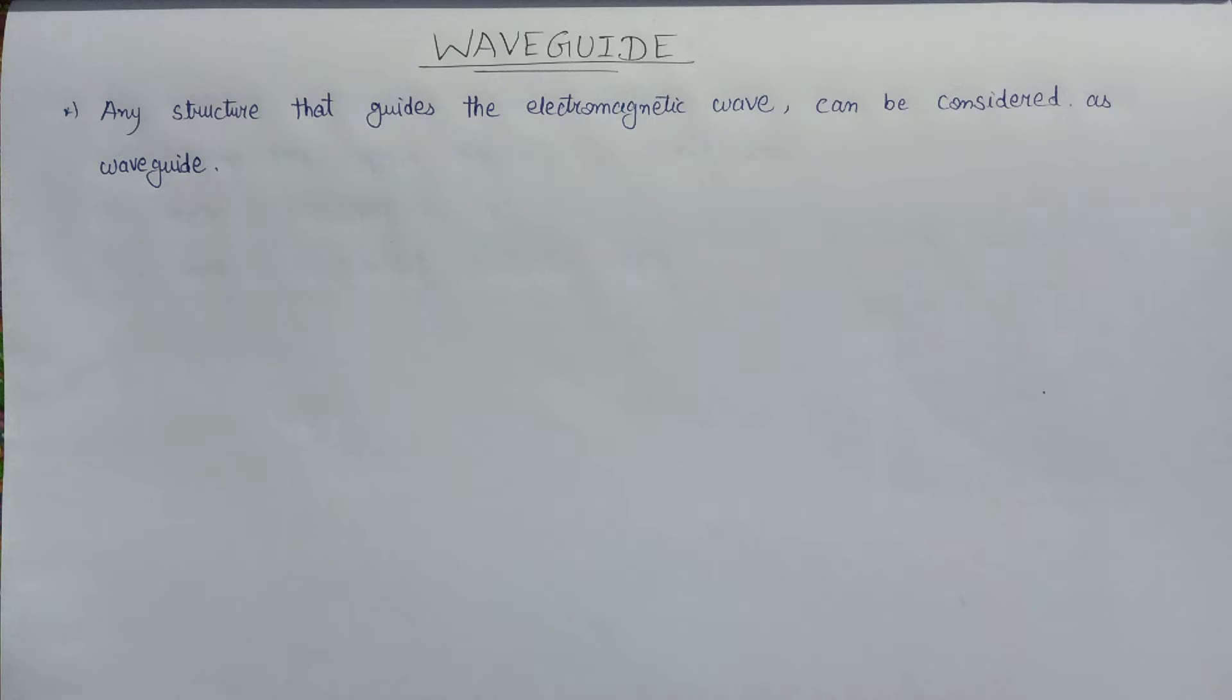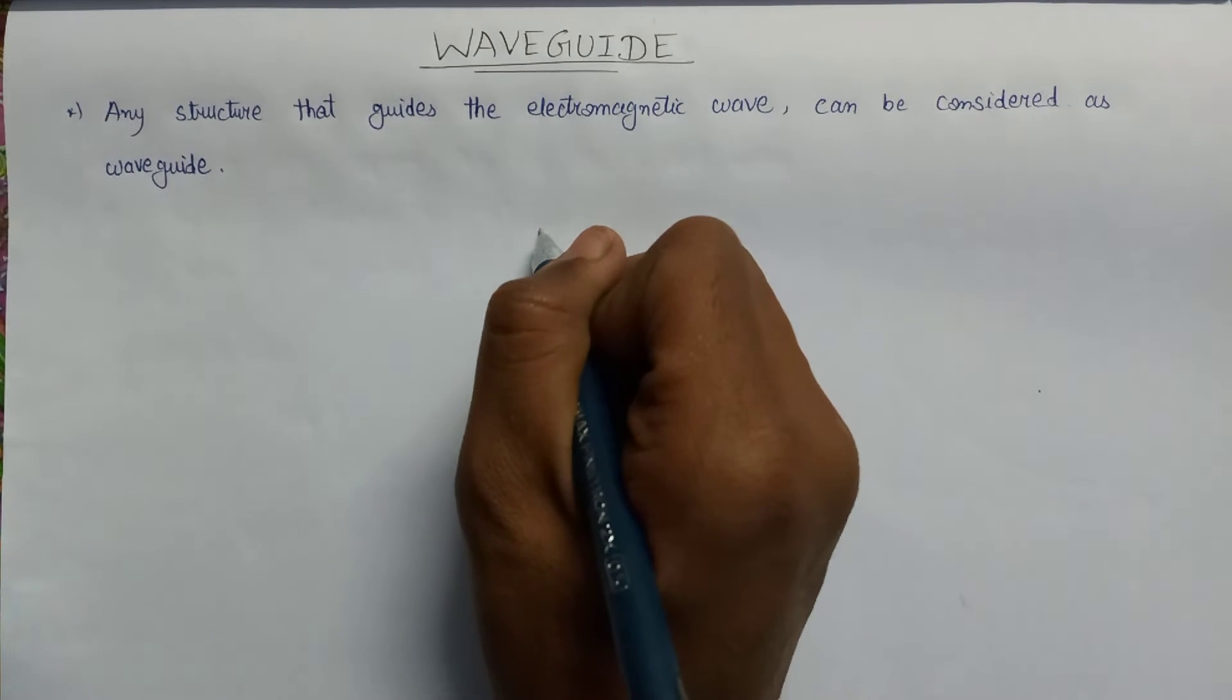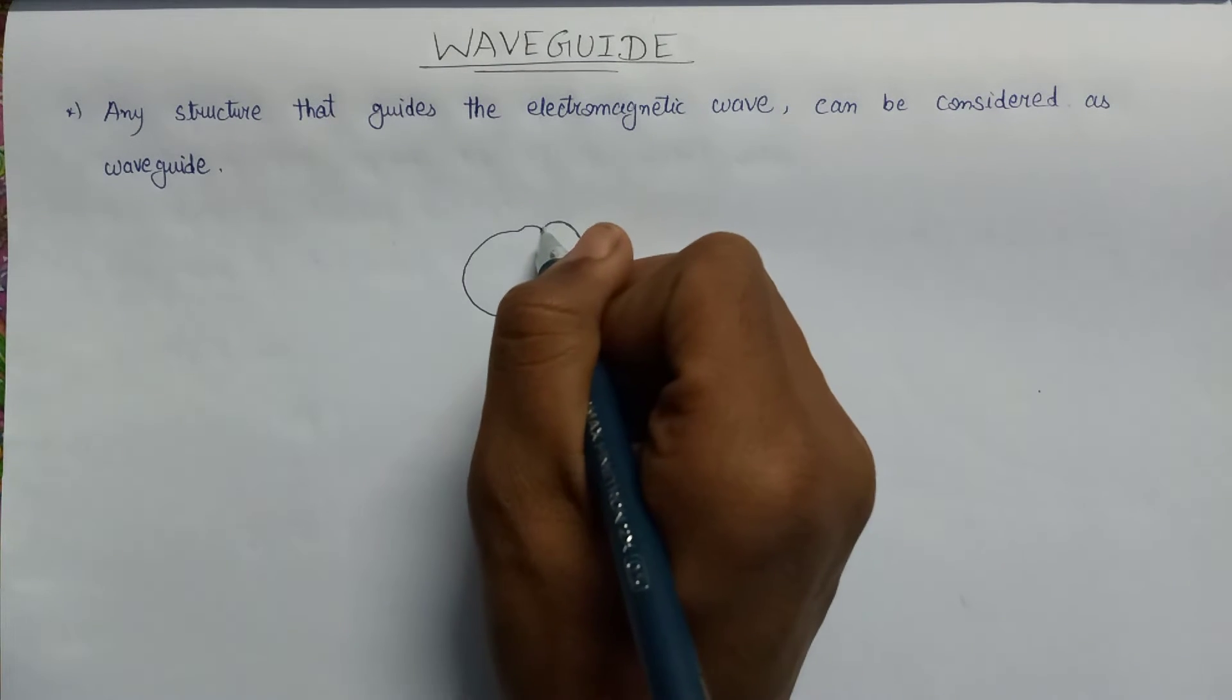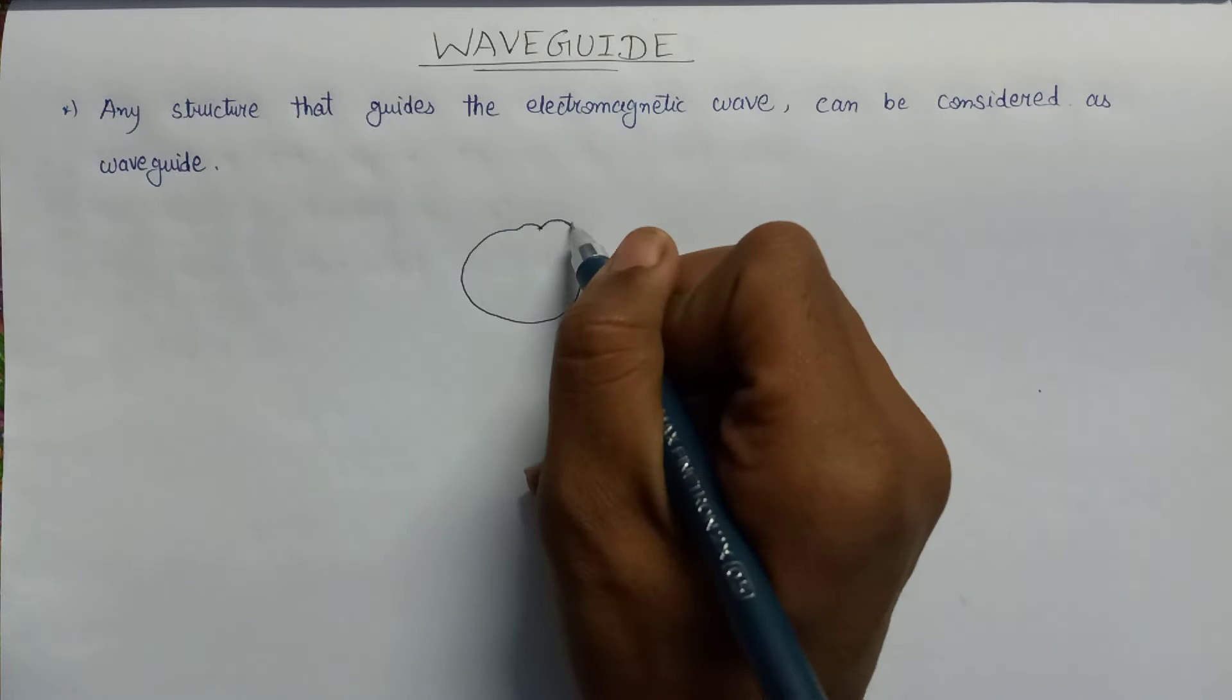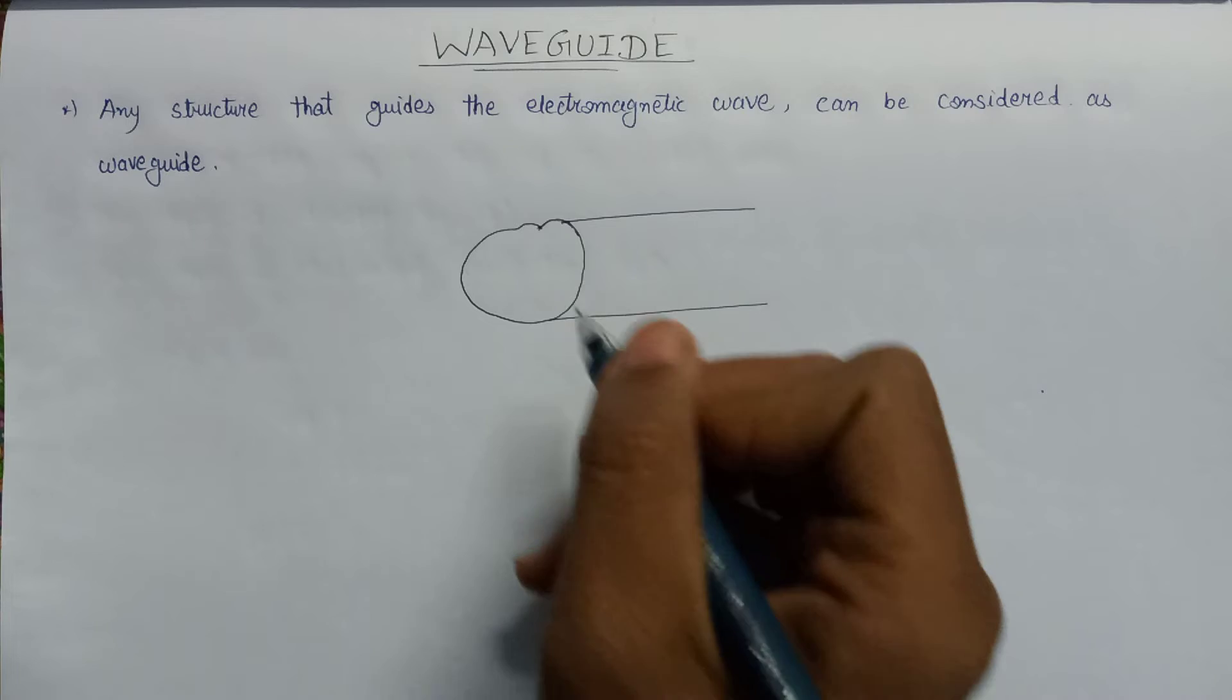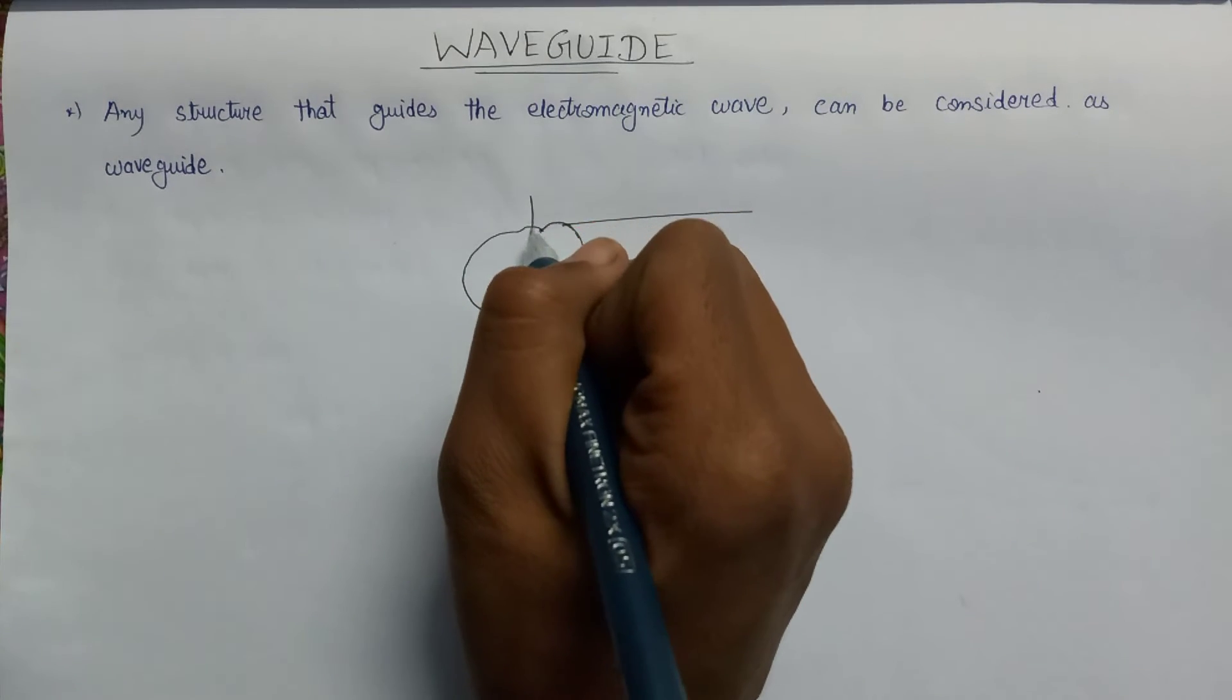Let us discuss about the structure of waveguide. Here we have an arbitrary shaped waveguide connected to a conducting pipe.